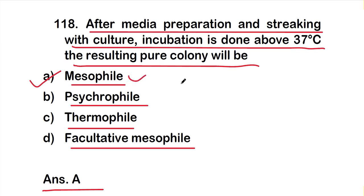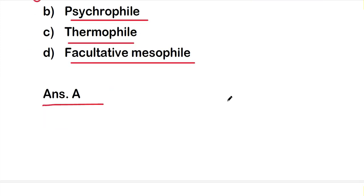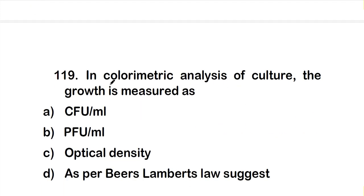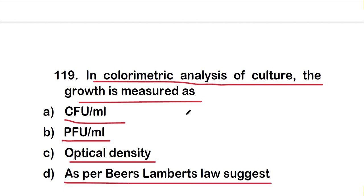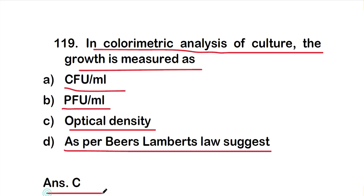Question number 119: In colorimetric analysis of culture, the growth is measured as Option A: CFU per mL, Option B: PFU per mL, Option C: optical density, or Option D: as per Beer's Lambert law. The right answer is Option C — optical density. In colorimetric analysis of culture, the growth is measured as optical density, that is OD.